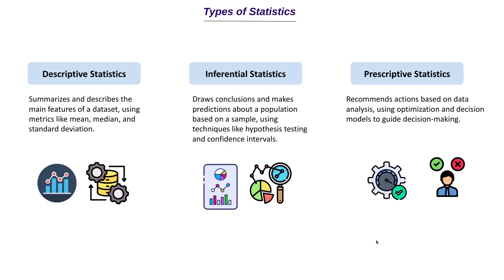Let's understand this with a real-world example. Say a data scientist is working at an e-commerce company like Amazon and is tasked to analyze customer data. They would look at what the average spending of a customer is for a particular segment or country, and what times of year they purchase more — these kinds of analyses. All of this is basically descriptive statistics. We are not drawing any conclusion; we are just trying to understand and summarize the data and present what the data is telling us.